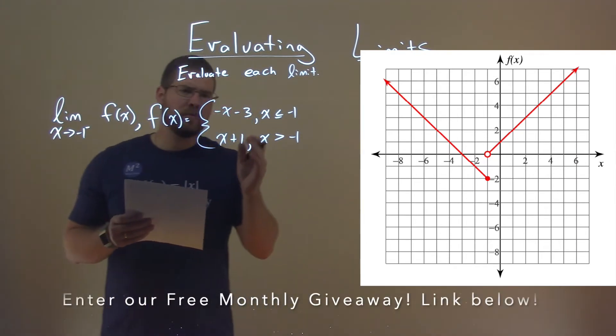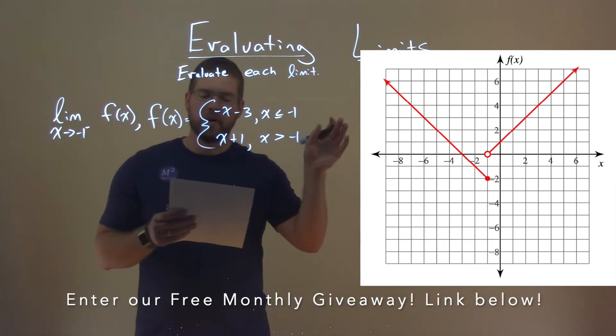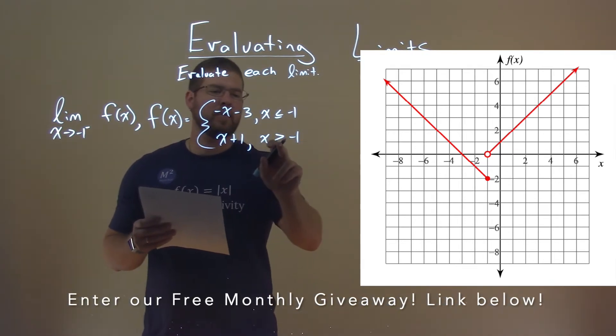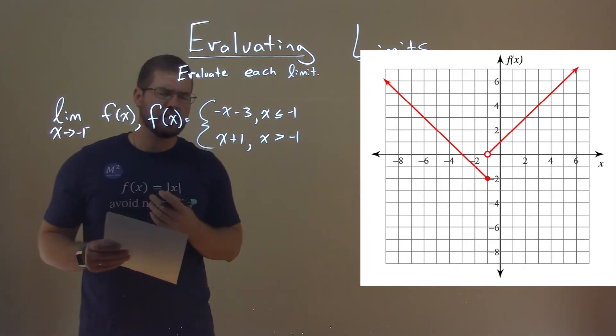That graph shows the piecewise function. We have the negative x minus 3 for when x is less than or equal to negative 1, and then the x plus 1 where x is greater than negative 1. Graphing this actually helps us really find this limit.